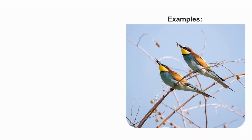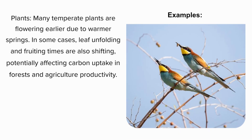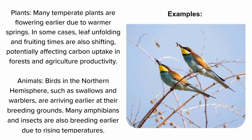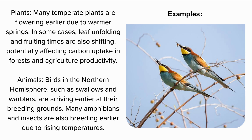Examples. Plants: Many temperate plants are flowering earlier due to warmer springs. In some cases, leaf unfolding and fruiting times are also shifting, potentially affecting carbon uptake in forests and agricultural productivity. Animals: Birds in the northern hemisphere, such as swallows and warblers, are arriving earlier at their breeding grounds. Many amphibians and insects are also breeding earlier due to rising temperatures.